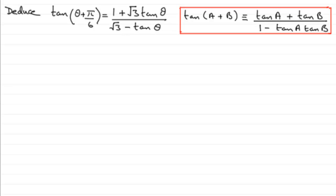Now, for this part, what we've got to do is deduce that the tan of theta plus pi upon 6 is equal to 1 plus root 3 tan theta, all divided by root 3 minus tan theta. And we found out in the previous part, although we should know it already, that the tan of A plus B was identical to tan A plus tan B, all over 1 minus tan A tan B. And it's that identity that we're going to use here.